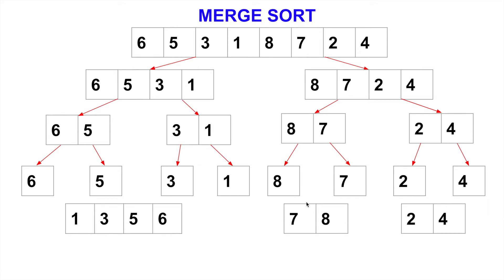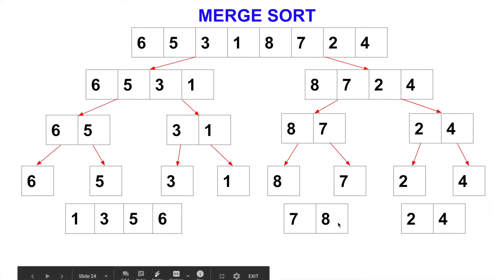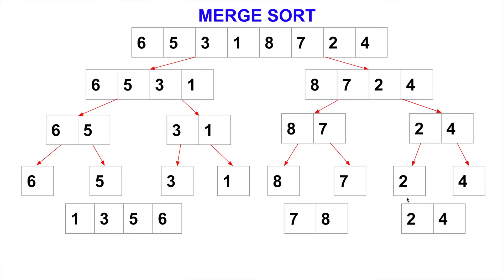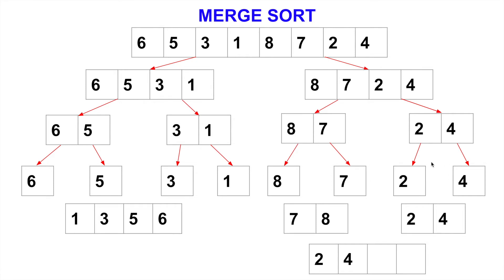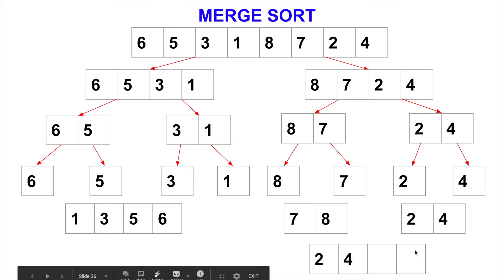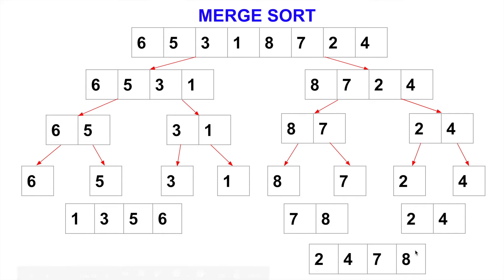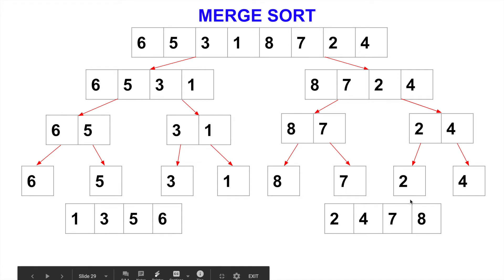Now again, we come back to here. We need to merge these two sorted subarrays — 7, 8 and 2, 4 — into one merged sorted subarray. Again, these two are sorted, so we can always compare only the two front elements. 2 and 7 — which one is smaller? 2. Then 4 and 7 — which one is smaller? 4. Then we simply copy 7 and 8 into the remainder. Now we have the second half sorted: 2, 4, 7, 8.